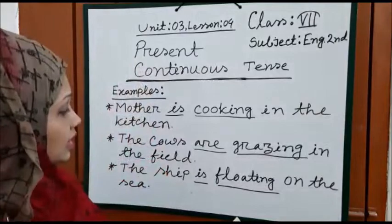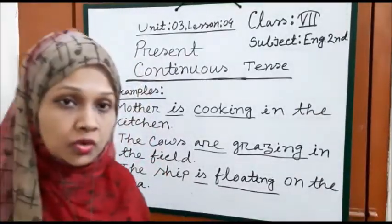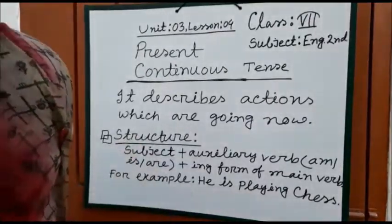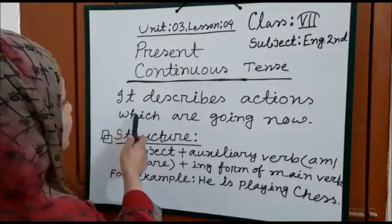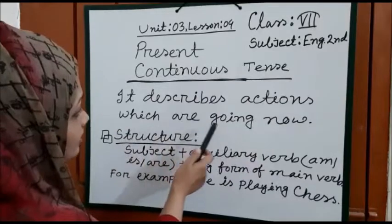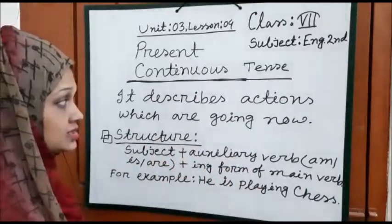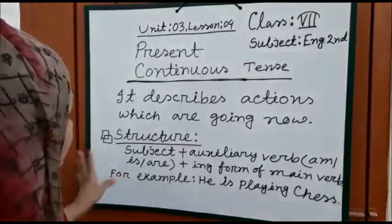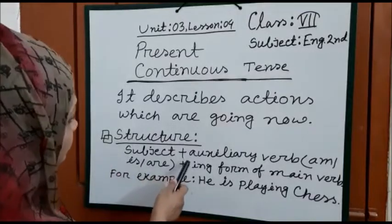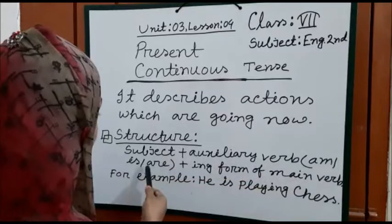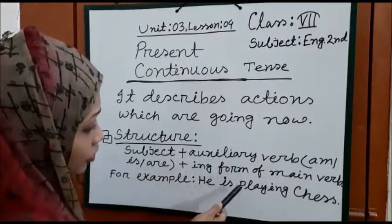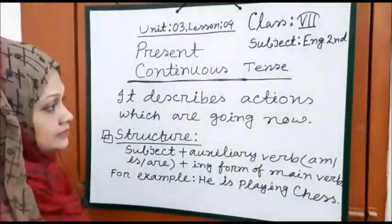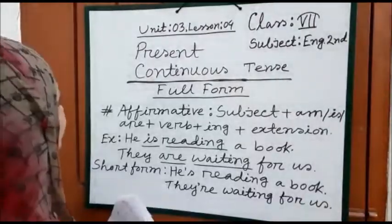Now we know what is present continuous tense. It describes actions which are going on now — that means the actions which we are doing right now. Suppose I am teaching you. So I am giving you the main structure: Subject + auxiliary verb (am/is/are) + ing form of main verb. For example: He is playing chess.